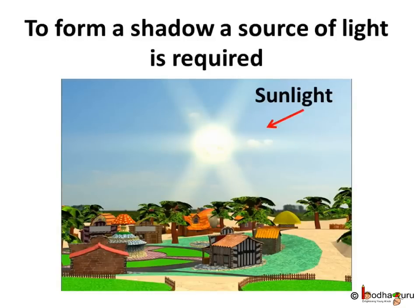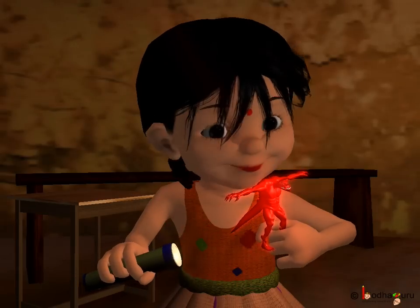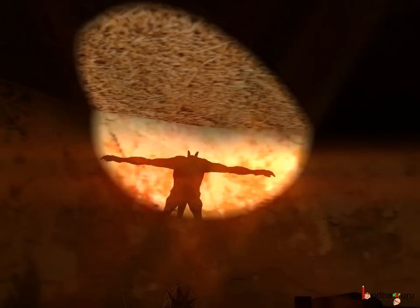Now we shall understand more about shadows. When exactly is a shadow formed? Can we find a shadow when it is totally dark? No, we cannot see a shadow in the dark. So to form a shadow, a source of light is required. It is only when the light rays are obstructed by an opaque object that we get a shadow of that object. Like in the story, Sona used a torch as the source of light to create a shadow.